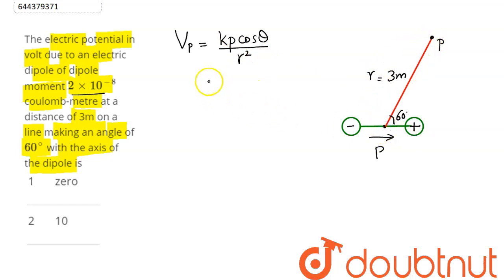Now substituting the values here we can say potential at this point P will be equal to k is 9 × 10^9, dipole moment here is 2 × 10^-8, cos of theta here is 60 degree divided by distance here is 3 meter so 3 square